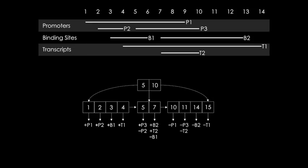Here is a simplified Giggle index of three annotation files: a promoters file, binding sites, and transcripts. Without getting too deep into the details, every interval indexed in a Giggle index corresponds to two values in the tree: one that corresponds to the start position, and one that corresponds to just after the end position. For example, P1 starts at 1 and ends at 9. Therefore, there's an entry in the B+ tree for 1 — with a plus P1 underneath it, meaning P1 starts at 1 — then just after the end would be position 10, where you see minus P1, meaning that P1 has ended by the time we get to 10.